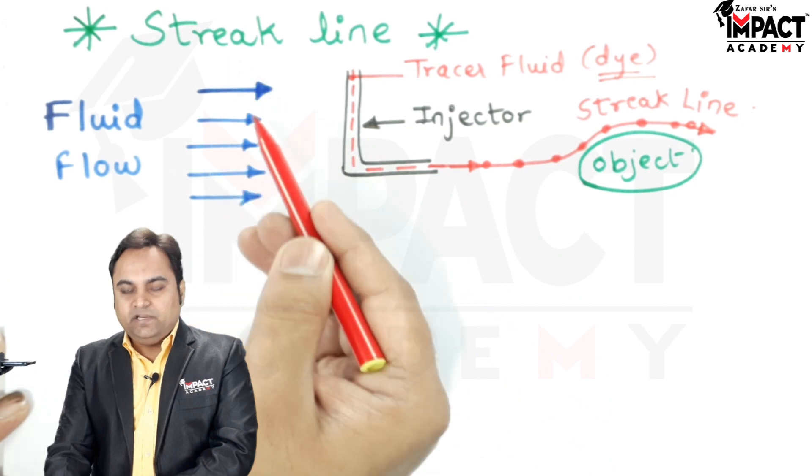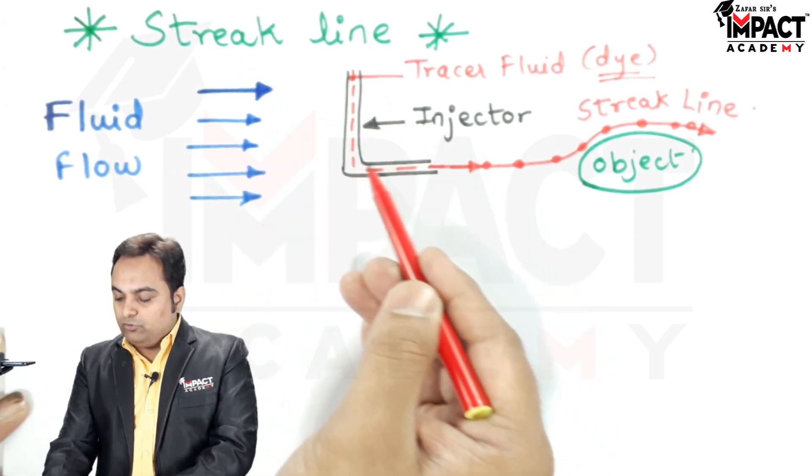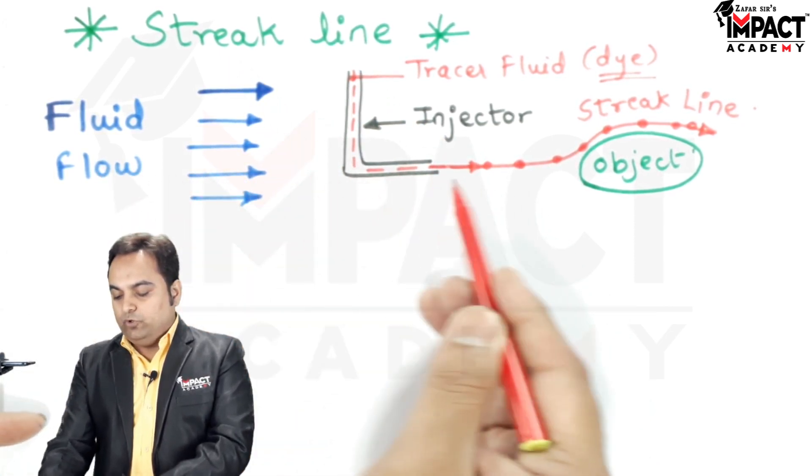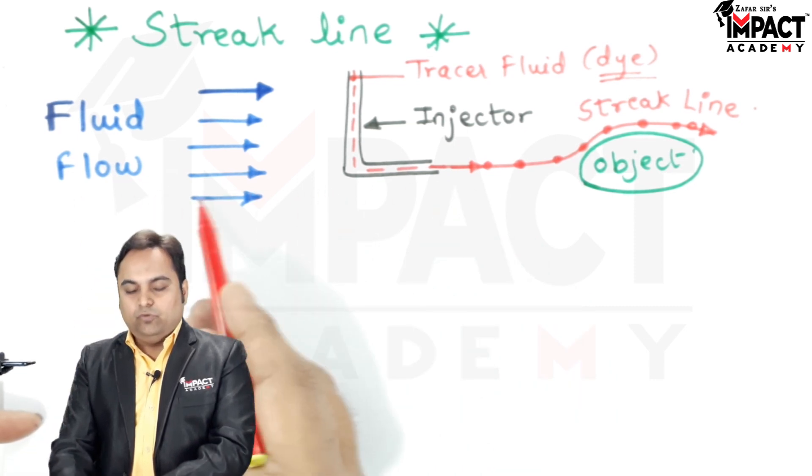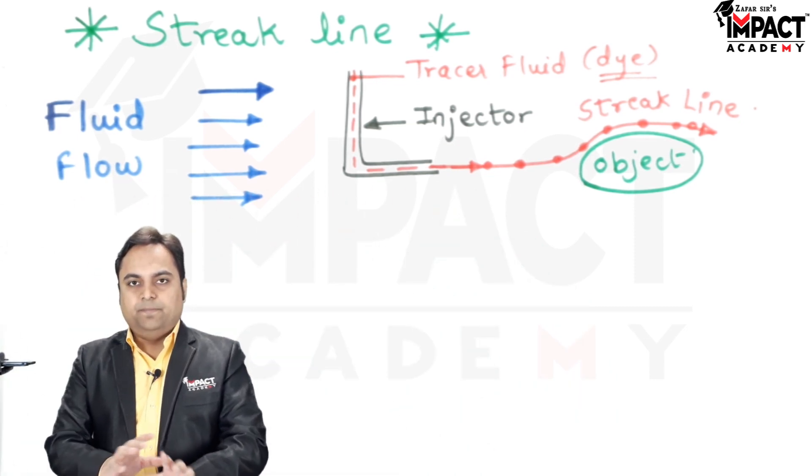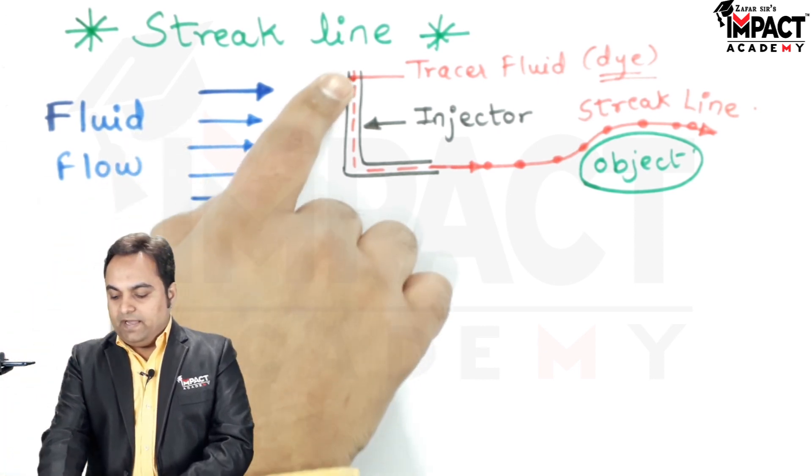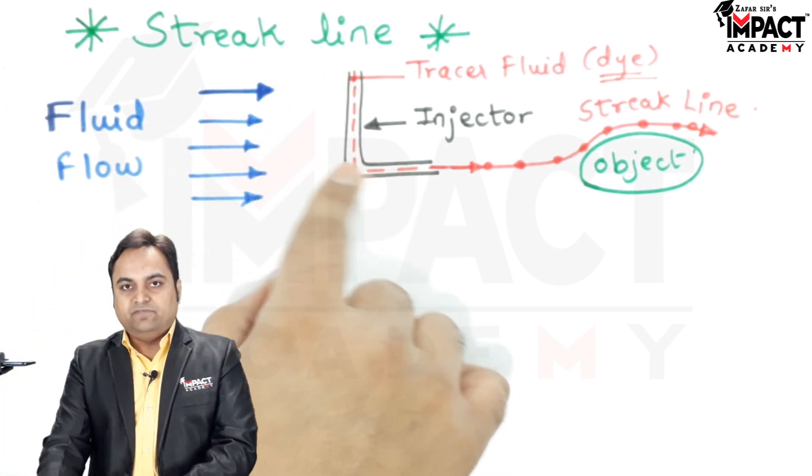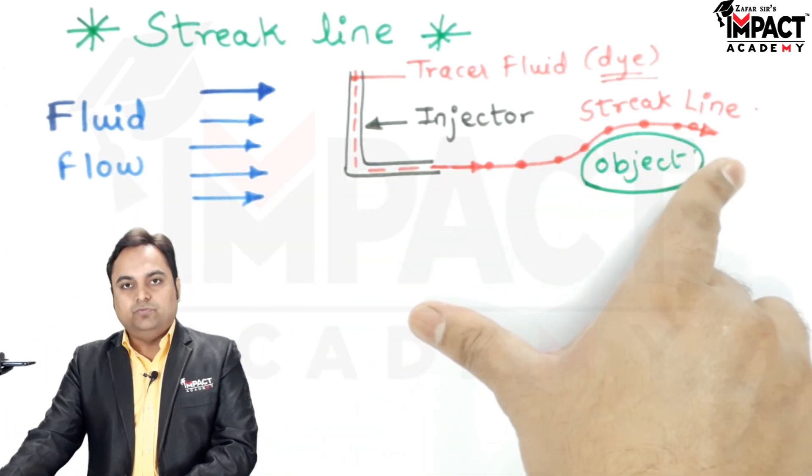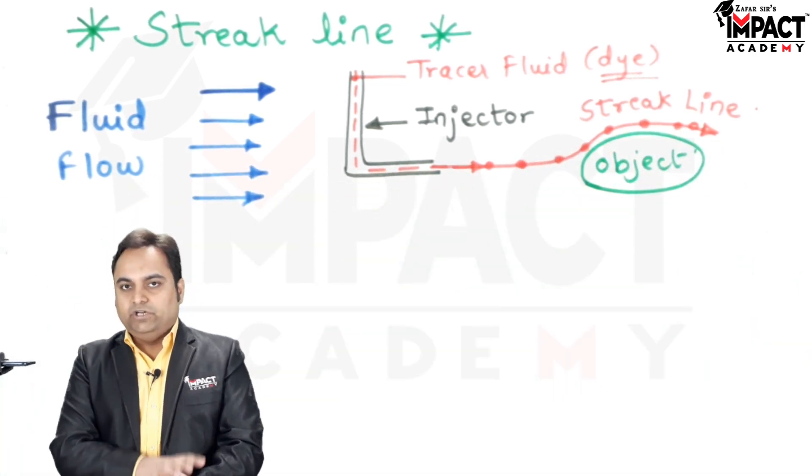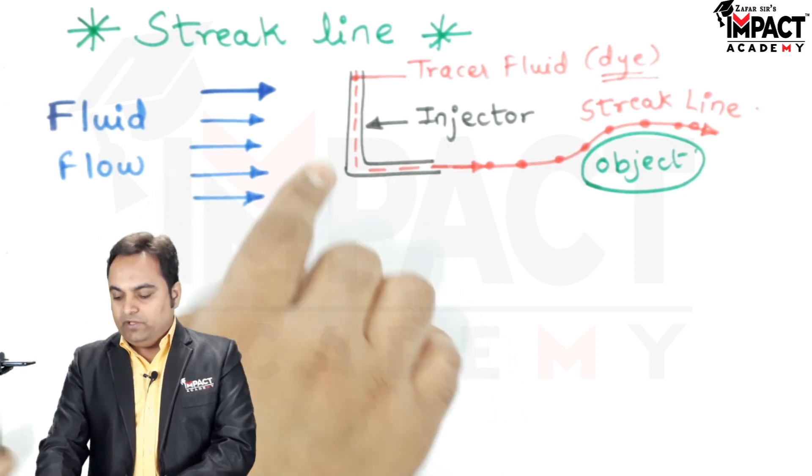So basically, streak line means when the fluid is flowing through this injector nozzle and the fluid which is flowing over here - this can be air or water. Like I have taken an example: if it is a wind tunnel, the wind would be flowing from here and into the injector we are going to have the smoke, and that smoke would be passing through the object. And if it is a water tunnel, then water would be flowing and inside this injector nozzle,